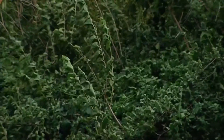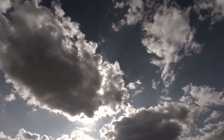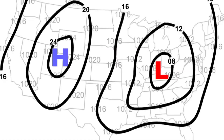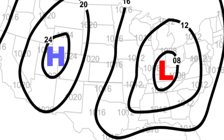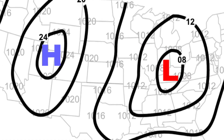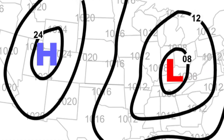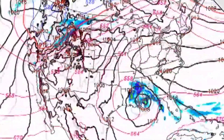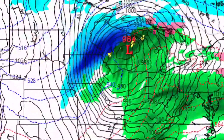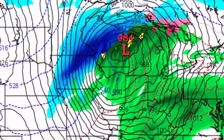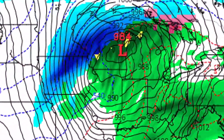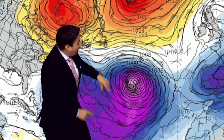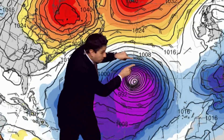Wind is nature's attempt to balance the inequalities in air pressure. On a map, areas of pressure are divided by what's called an isobar, or lines of constant pressure. The closer these lines are together, the stronger the wind is. That's why a hurricane has a bunch of these lines expanding from the center.